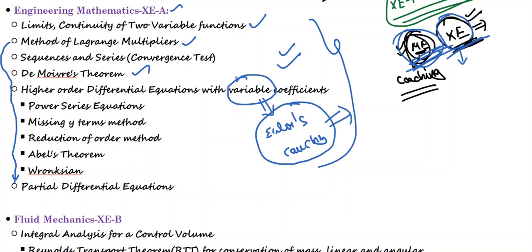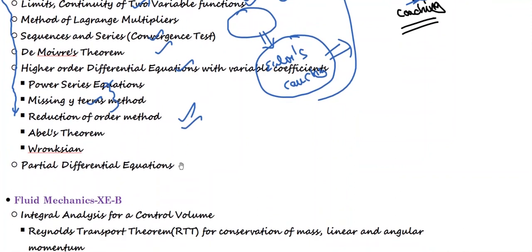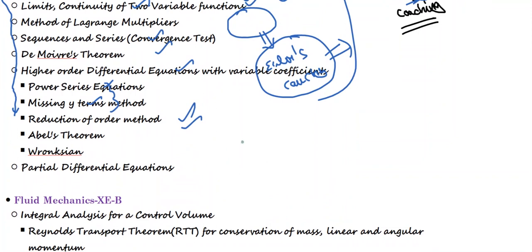In the ME syllabus, we discuss only constant coefficients, and only one method for variable coefficients — the Euler-Cauchy method. But for XC, there are additional methods such as the power series method, missing Y terms, reduction of order method, Abel's theorem, and the Wronskian method. We will be discussing all those things. And then partial differential equations — somewhat more discussion. I gave an introduction to solving PDEs by separation of variables in the ME course, but here we'll discuss one more method and more examples.